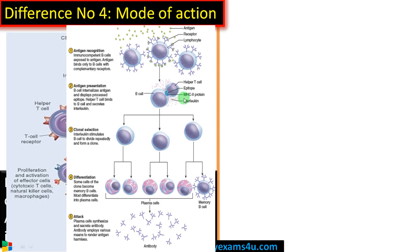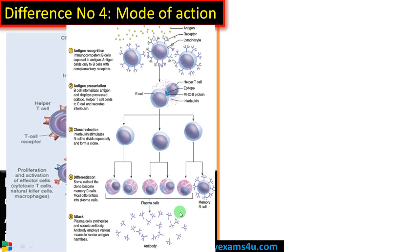Sometimes B cells act as antigen presenting cells, just like macrophages — processing antigen and presenting it on MHC class 2 receptor, which is recognized by helper T cells. The helper T cell in turn activates the B cell, causing its clonal selection — forming numerous B cells with that specificity.